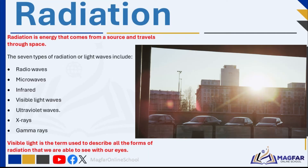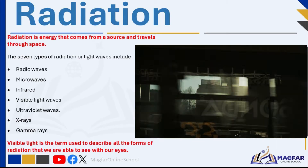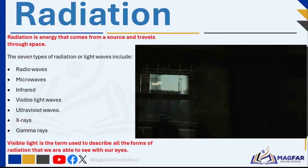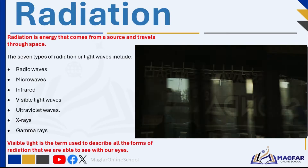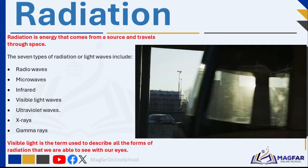Visible light waves are the light waves that we, as humans, are able to see. Visible light waves include the seven colors of the rainbow.